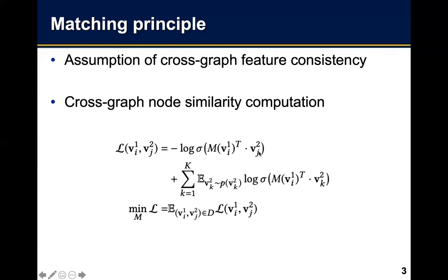After training, we select the nodes in two graphs with the largest similarity as the network alignment result. VK2 represents the negative nodes.